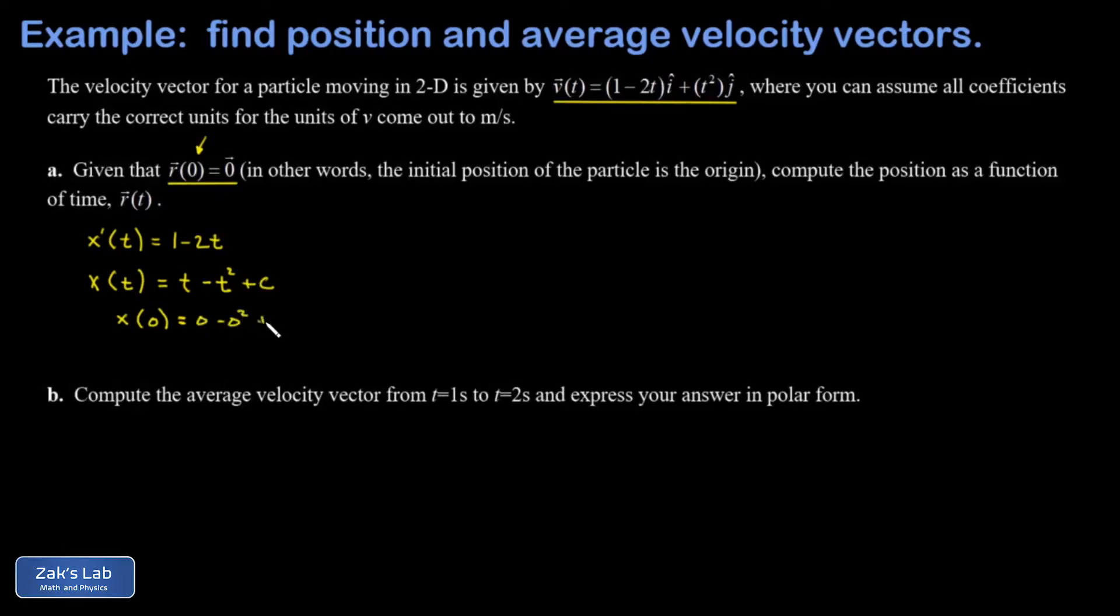And we find out that c is equal to 0, so we can just forget about that. And now I have my x coordinate as a function of time given by t minus t squared.